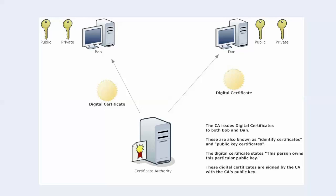The certificate is also going to have the URL of a revocation list. We'll talk about what exactly that revocation list is and why it exists. It's going to have some other information, but fundamentally what the CA is saying is: this person owns this particular public key, and this is who they are.